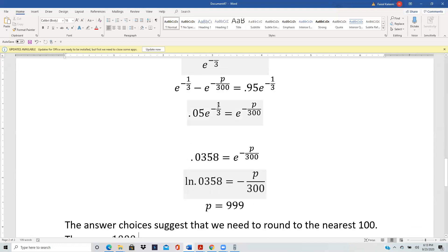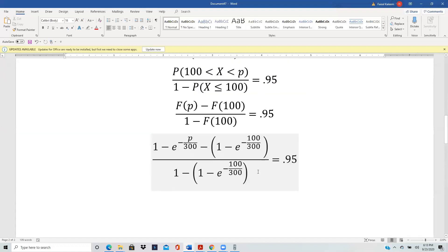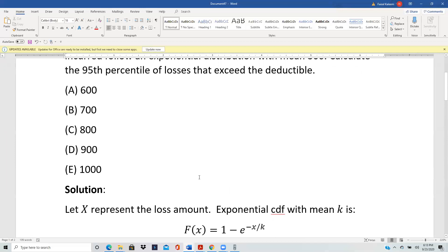And all this is 0.0538. And then you take LN both sides. So LN of 0.0538 is -P/300. And then this gives you P equals 899. When you look at the answer choices, they are rounded to the nearest hundred. So 899 rounds to 1,000. And the answer is E, 1,000.